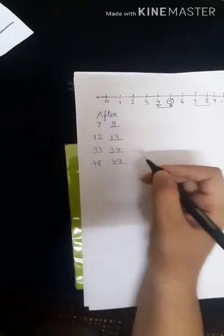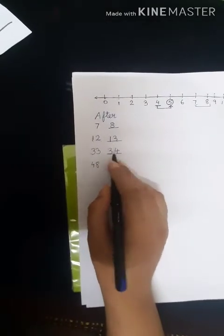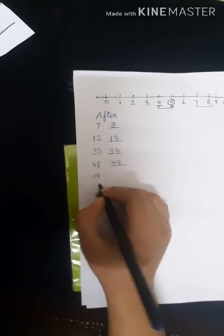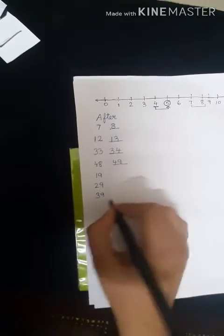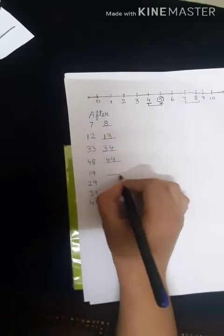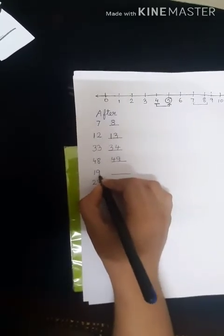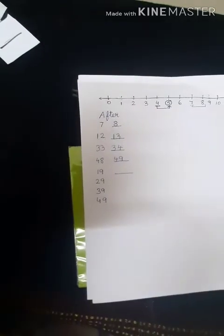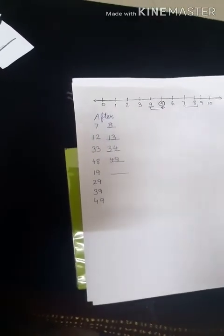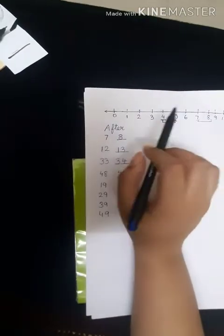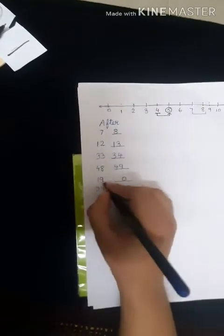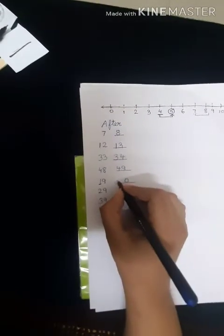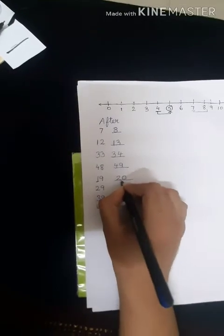Now children, here there are some naughty numbers which do not follow this rule. Say let us take number 19, 29, 39, 49. So children, here what comes after 9? 10. But when we see the number line from 0 to 9, what number comes after 9? We will again come back to 0. Now tell me what number comes after 1? 2. So what comes after 19? 20.